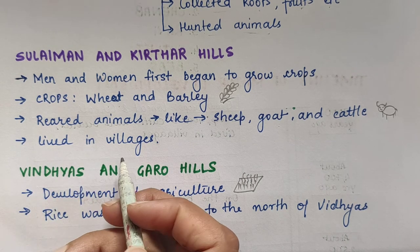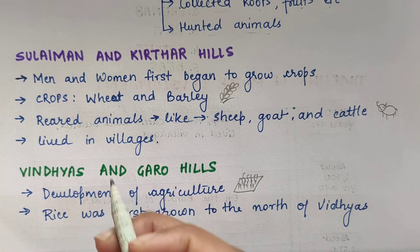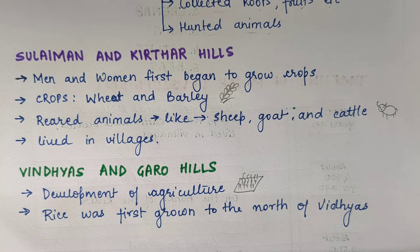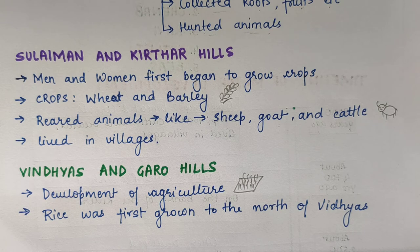They lived in villages. They were quite developed people and were living in villages. Earlier, people were moving from one place to another. But kuch time baad, jab agriculture start hua, to logo ne ek hi jagah rehna shuru kiya.